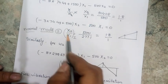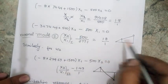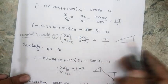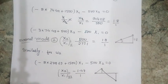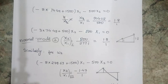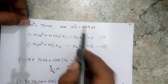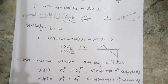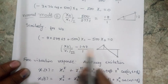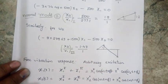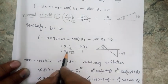We call this the normal mode or the pattern of vibration of our system. It indicates that if the first mass is moving with an amplitude of 1, the second mass will move with an amplitude 1.8 times that of the first mass. Please keep in mind that these are not absolute values but relative values. Similarly, when I put the second natural frequency into the governing equations, I get the ratio X2/X1 = −1.47. The minus sign indicates that if the first mass moves with amplitude 1, the second mass moves with amplitude 1.47 but in the opposite direction — this is the second normal mode.